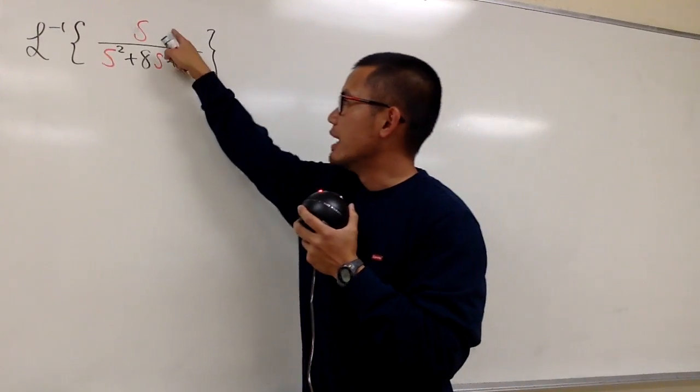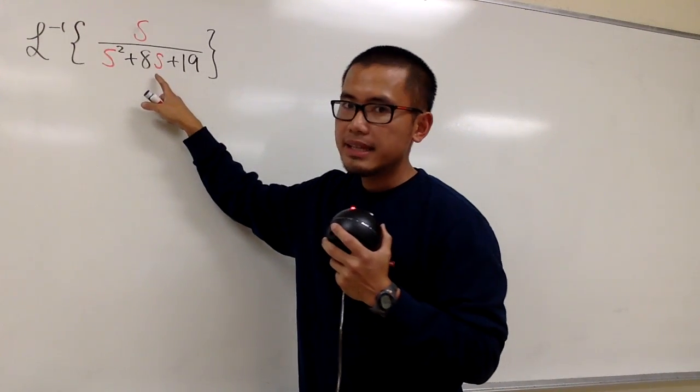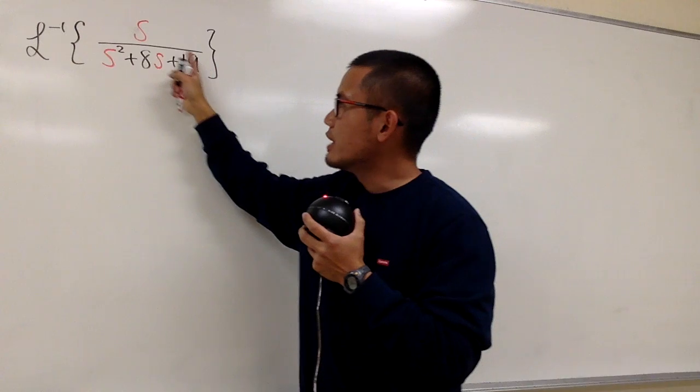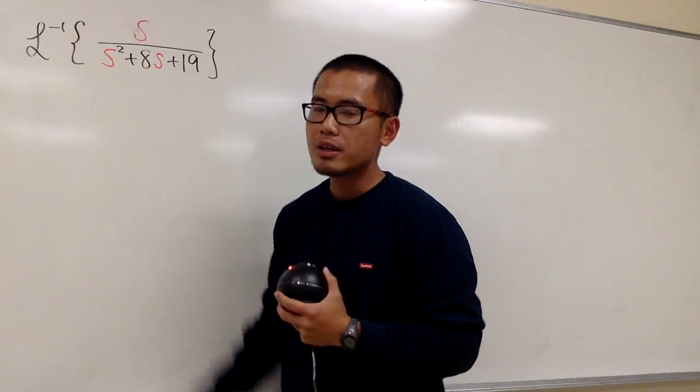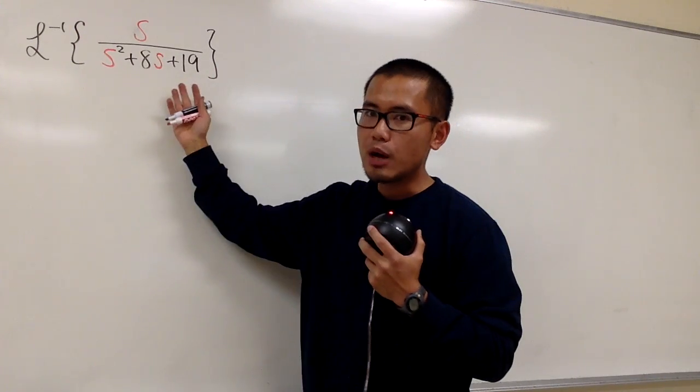We are going to figure out the inverse Laplace of s over s squared plus 8s plus 19. As we can see, we have a quadratic in the denominator, so we should try to factor this out.